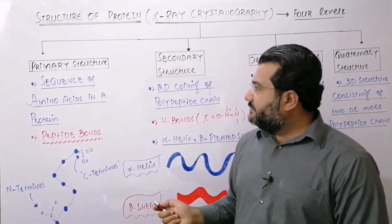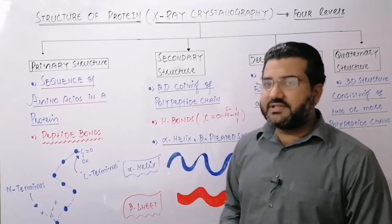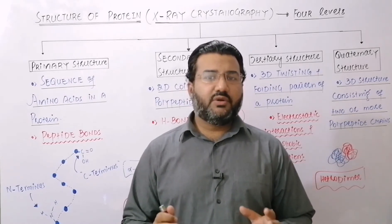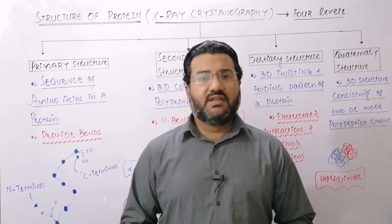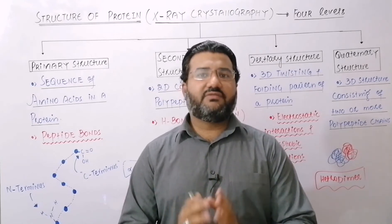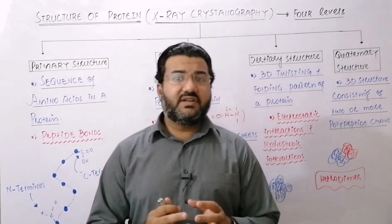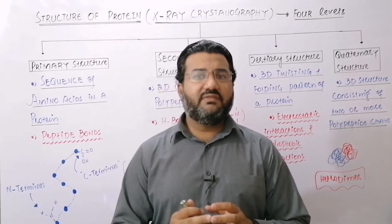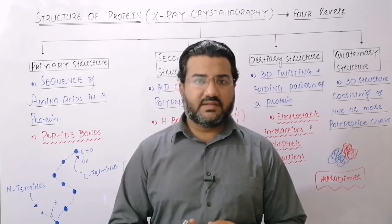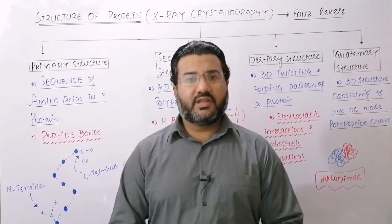What is primary structure? Primary structure basically means the study of the sequence of amino acids in a protein. All proteins are made up of 20 common amino acids, but the number of amino acids and the sequence of amino acids varies from protein to protein. The sequence of amino acids is very important because even if the sequence of a single amino acid in a protein is disturbed, that results in the loss of the structure and function of that particular protein.